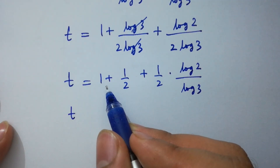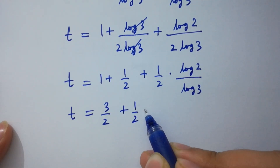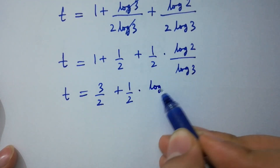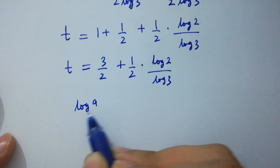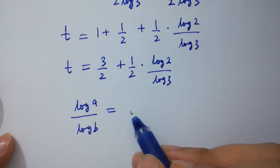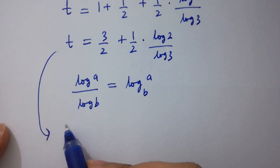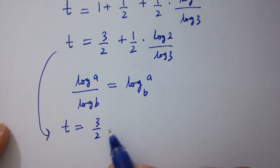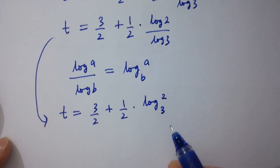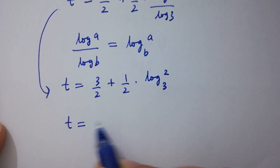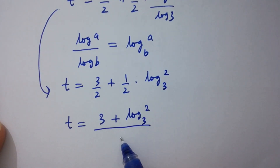t equals 3 over 2 plus one half times log 2 over log 3. Using the rule log a over log b equals log a to the base b, t equals 3 over 2 plus one half times log 2 to the base 3, which is the same as t equals (3 plus log₃2) over 2.